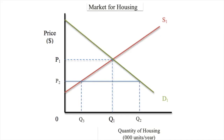So this is the price ceiling diagram right here. You make a straight across line like this, you create an equilibrium at Q2 that will not be realized. Why? Because at the P2 level, only Q3 housing would be provided. So you can see what would result — what's going to happen?